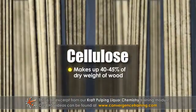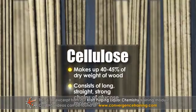Cellulose makes up 40 to 45 percent of the dry weight of wood, and it consists of long, straight, strong chains of glucose molecules.